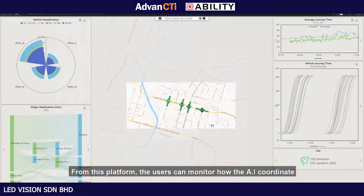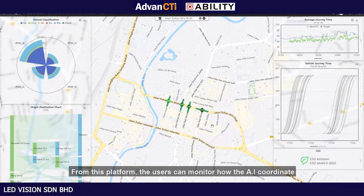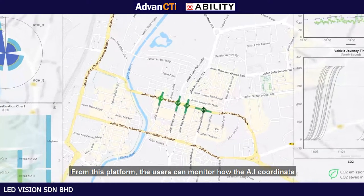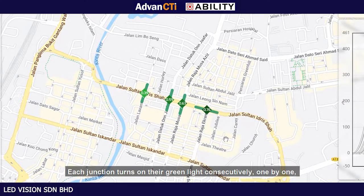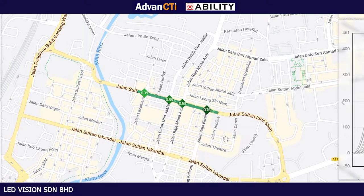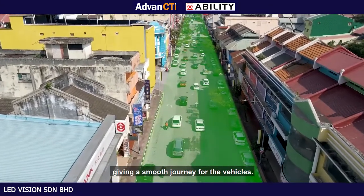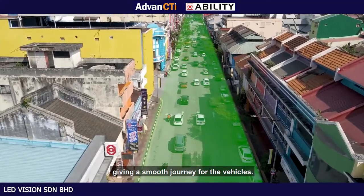From this platform, users can monitor how the AI coordinates the green wave for the four junctions. Each junction turns on its green light consecutively, one by one, giving a smooth journey for the vehicles.